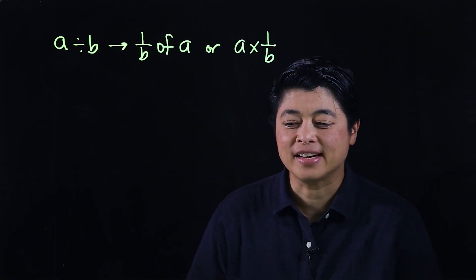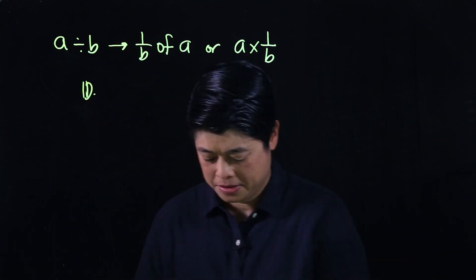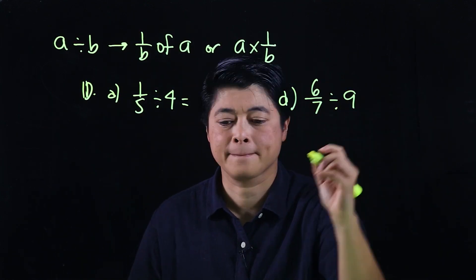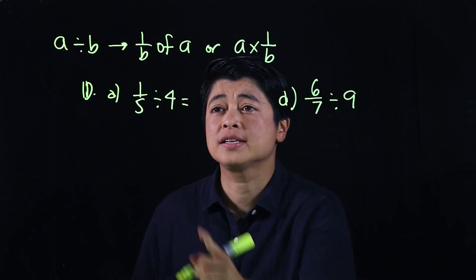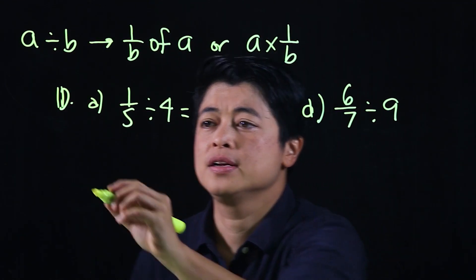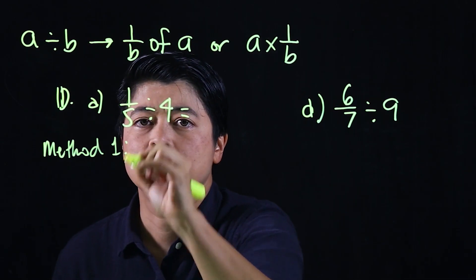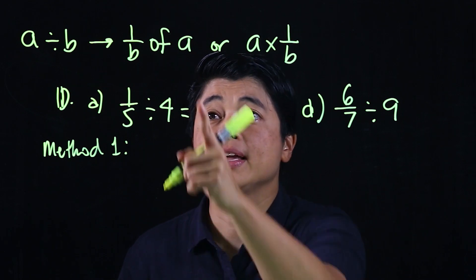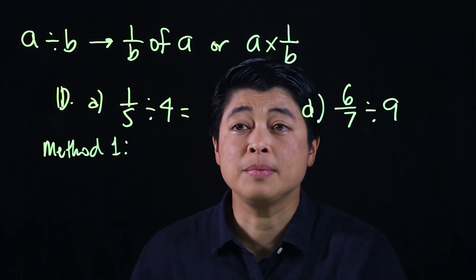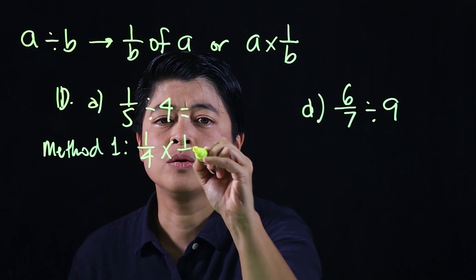Page 38, I've selected from problem 1d. The first question says 1/5 divided by 4. I'll do right here method 1. Method 1 is this: we do 1/4 times 1/5.